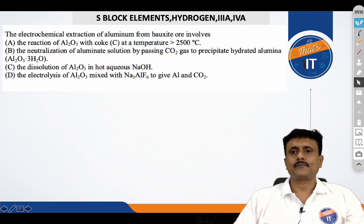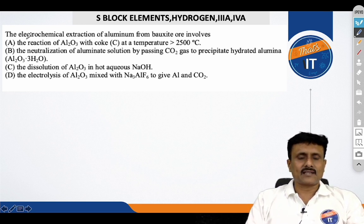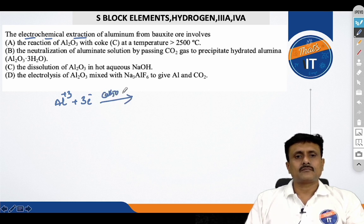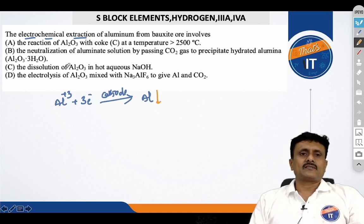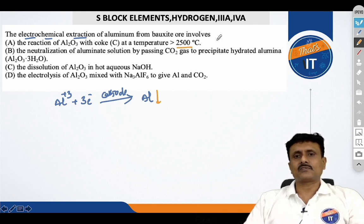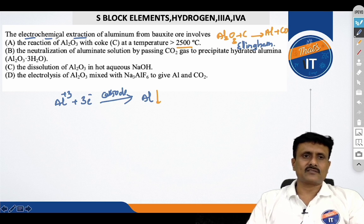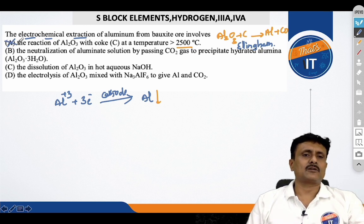Let's see the next question. The electrochemical extraction of aluminium from bauxite ore involves... We are talking about electrochemical extraction where you know that aluminium plus 3 is reduced at the cathode to give you aluminium. So, aluminium is deposited. You can see that the reaction of Al2O3 with coke about 2500 degrees Celsius is possible according to the Ellingham diagram.